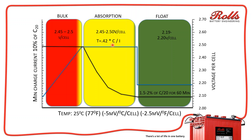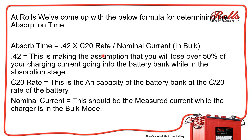About 10 to 15 years ago, we developed this formula: time equals 0.42 multiplied by the C20 rate of the battery, divided by nominal charge current. The 0.42 factor makes the assumption that you're going to lose at least 50 percent of your charge current during the absorption stage. We don't know exactly because it tapers over time. Your nominal current is going to probably be between 60 and 70 amps — and that is the number you want to use. You don't want to use your peak; you want to use what is real.